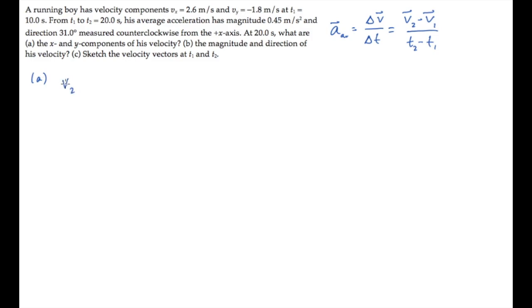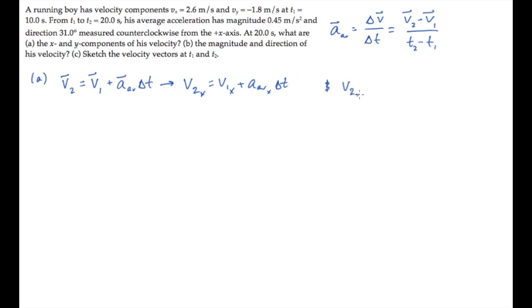Part A asks us for the x and y components of the final velocity, v2. We can solve the average acceleration equation for the final velocity, v2, to see that it equals the initial plus the average acceleration multiplied by the change in time. Separating this equation into its components gives two equations: the x component and the y component. We can calculate the final components of the velocity once we know the components of the acceleration, so we need to find A_average_x and A_average_y.